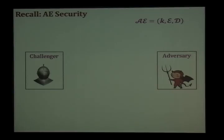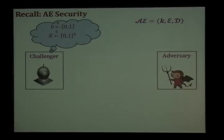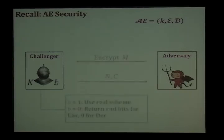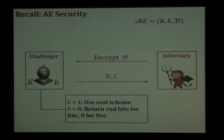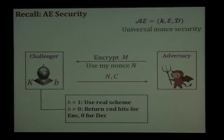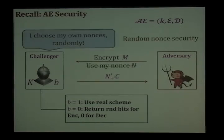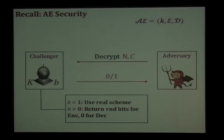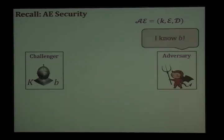When we describe the security of a scheme we think of a game between a challenger and an adversary. At the beginning the challenger chooses a random bit B and a key K. Since this is authenticated encryption security, the adversary can make both encryption and decryption queries. When the adversary makes an encryption query, depending on whether B is one or zero, the challenger replies either with real encryptions or random bits. In the universal nonce setting the adversary gets to provide the nonces used for encryption, but in the random nonce setting the challenger chooses its own nonces randomly — this will play an important role in the attack. For decryption queries, if the query corresponds to a valid ciphertext the adversary gets back a one; otherwise a zero. The aim of the adversary is to find bit B.